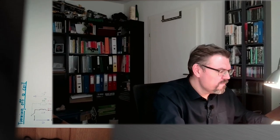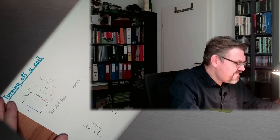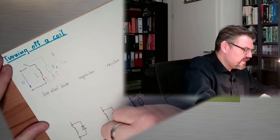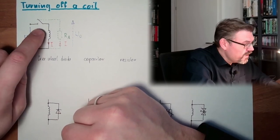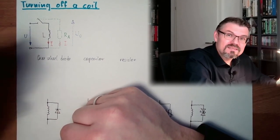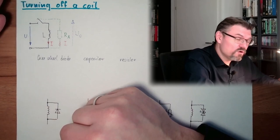Last time we talked about how we're turning on and off a coil, and then we realized, aha, there's something happening, especially when turning off a coil. Because I have again drawn this situation here. We said, okay, there's a coil, there is an initial current running through, and then I switch it off. This is the task we have to do. We want to switch off a coil, right?